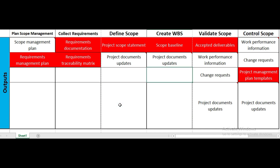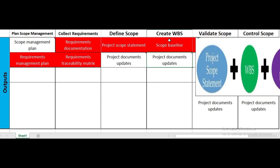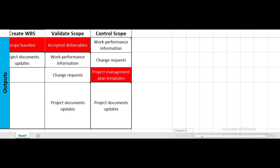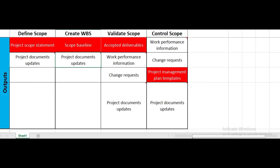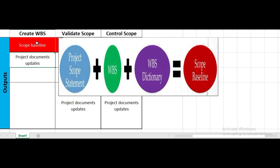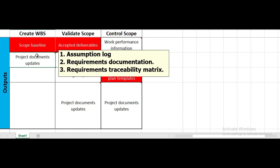The key output of create WBS is the scope baseline. The scope baseline includes the project scope statement, the WBS — which is the hierarchical decomposition of project work — and the WBS dictionary. Combined, these three components form the scope baseline. Additionally, documents such as the assumption log, requirements documentation, and requirements traceability matrix are updated.